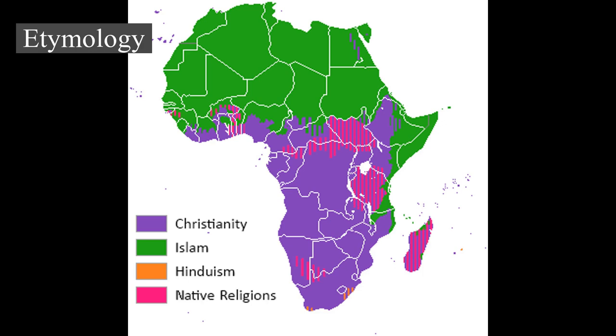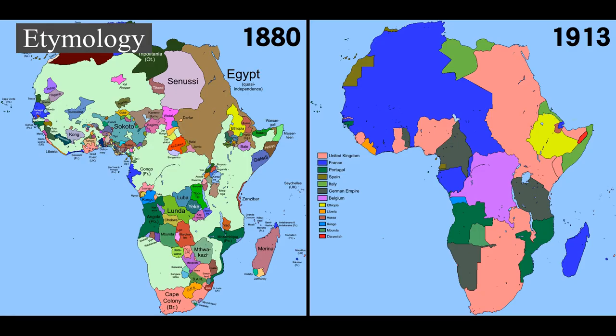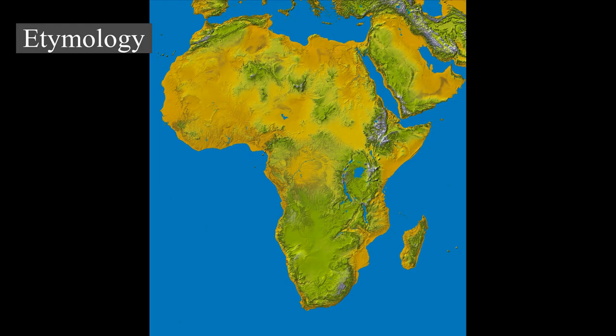The name had usually been connected with the Phoenician word meaning 'dust,' but a 1981 hypothesis asserted that it stems from the Berber word 'ifri,' plural 'ifrin,' meaning 'cave,' in reference to cave dwellers. The same word may be found in the name of Banu Ifrin from Algeria and Tripolitania, a Berber tribe originally from Yafran, also known as Ifrin in northwestern Libya, as well as the city of Ifrane in Morocco.